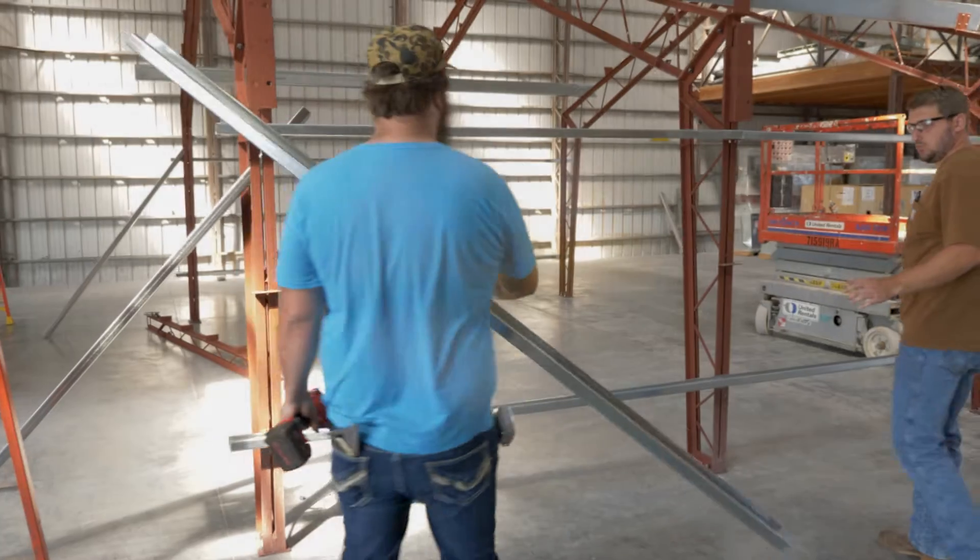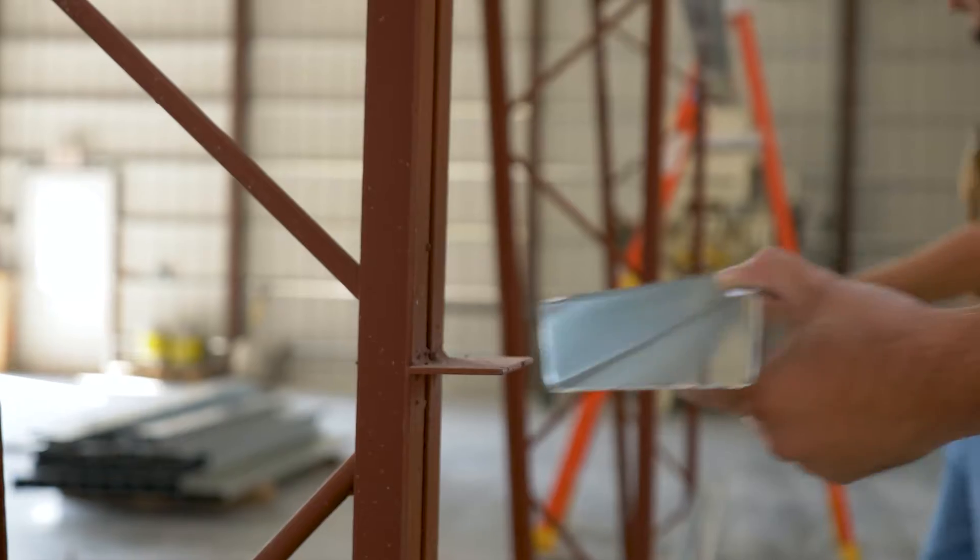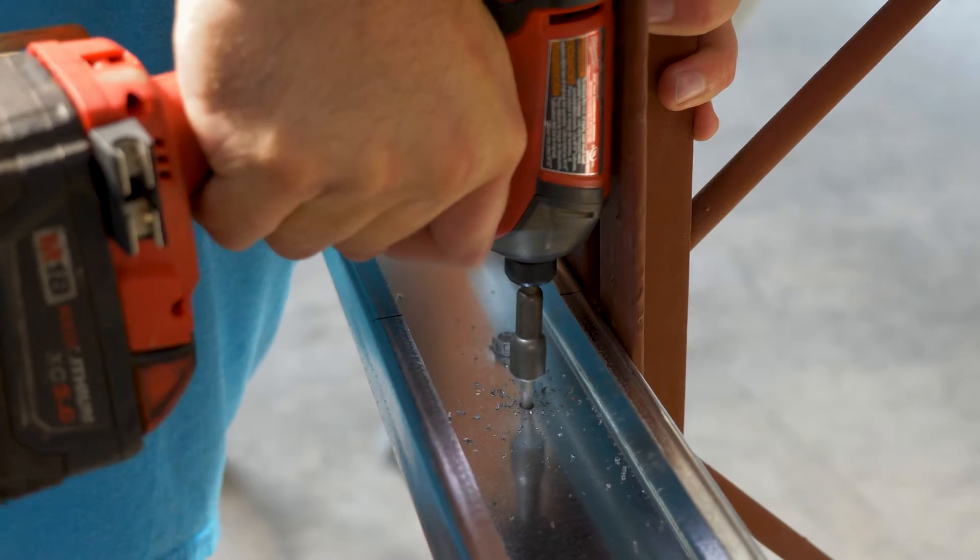Now that your main building columns are in place, it's time to install your sidewall girts. Girts are the secondary members that will make up the walls of your building.